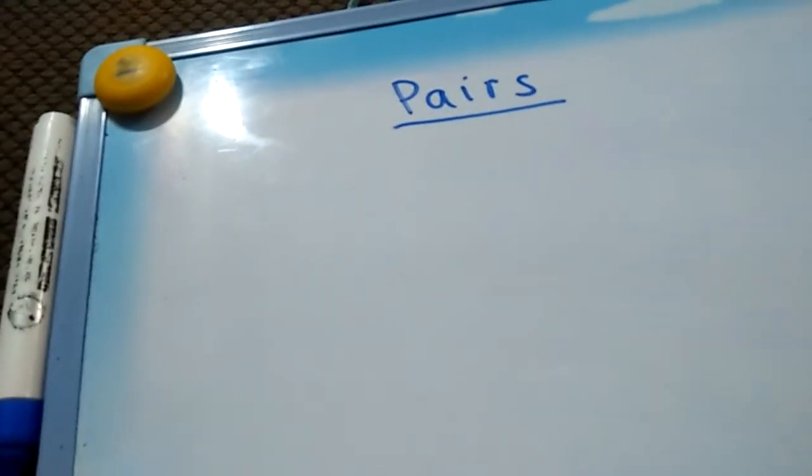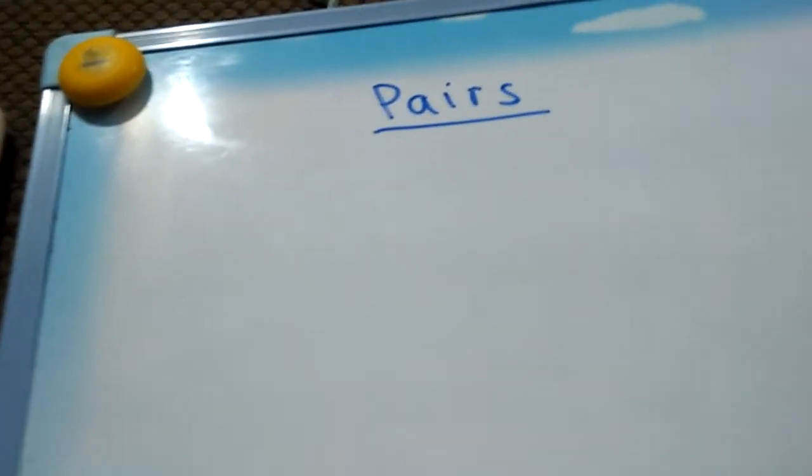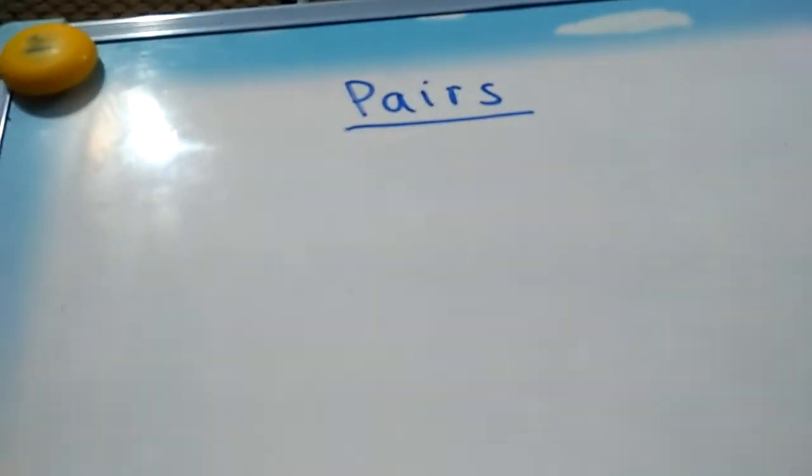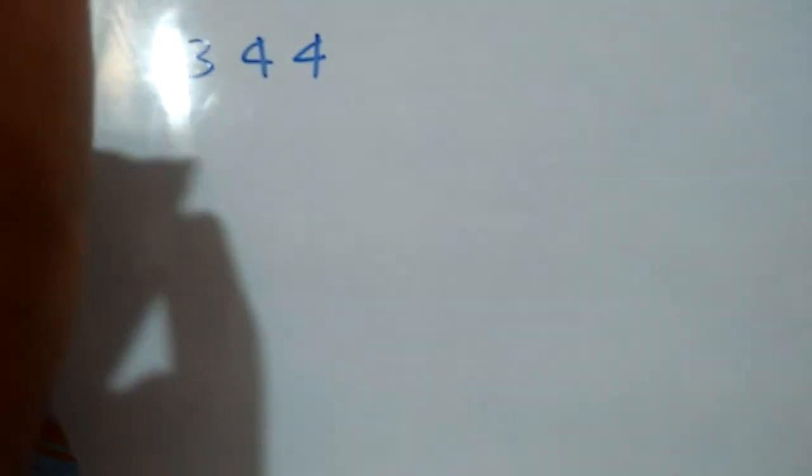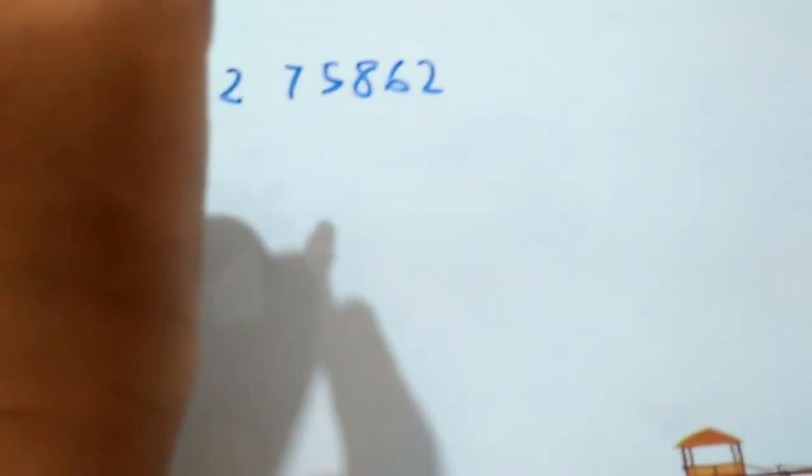So here are some cyclic numbers that have pairs from one to nine and those are 244827586206896...